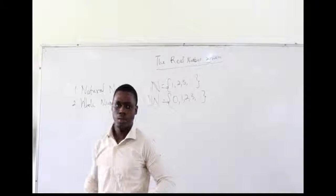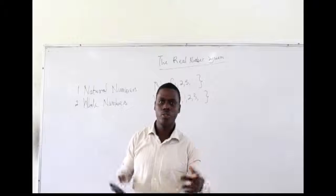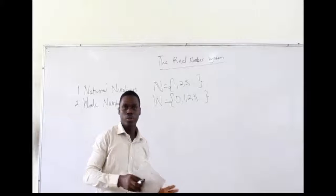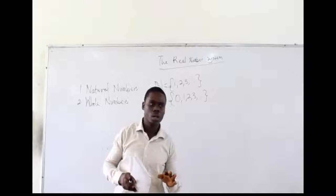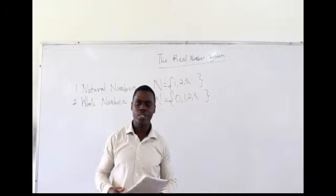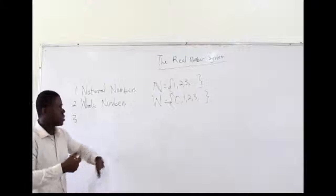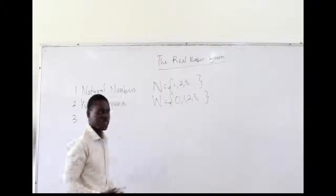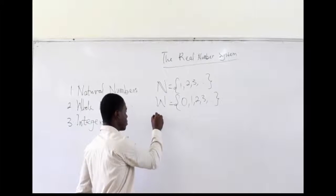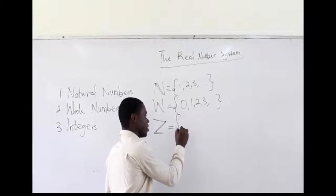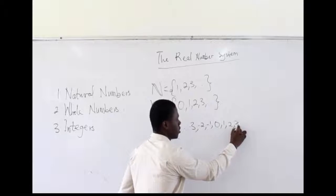Then the farmer also realized that, having no animals, he could go and borrow some from his colleague. He went and borrowed two, three, four — but how would that be recorded? They don't belong to him. So the idea of negativity comes in. A group of mathematicians, after serious consideration, came to accept negative numbers as also being part of the number system. We have negative numbers together with the already existing numbers, and we denote that set as integers — negative three, negative two, negative one, zero, one, two — and these continue.